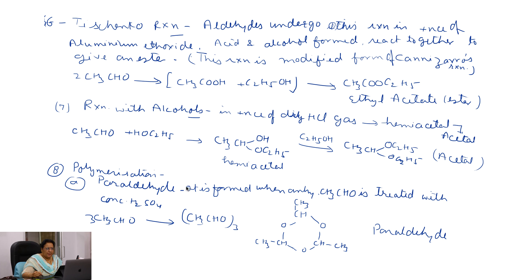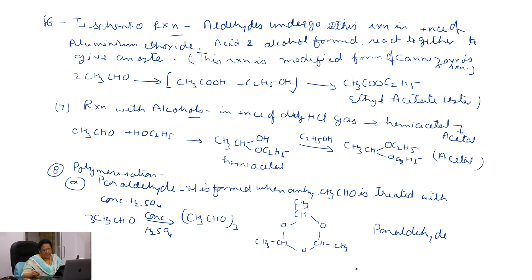The next property is polymerization — paraldehyde. Paraldehyde is formed when anhydrous acetaldehyde is treated with concentrated H2SO4. In this reaction, three molecules of acetaldehyde polymerize to form paraldehyde.